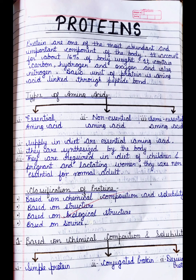Now we talk about types of amino acids — this is very important. Amino acids are basically of three types: essential amino acids, non-essential amino acids, and semi-essential amino acids. Essential amino acids cannot be synthesized by the body, so we must obtain them from our diet. Non-essential amino acids can be synthesized by the body. Semi-essential amino acids are required in the diet of children and pregnant and lactating women; they are not as important for normal adults.